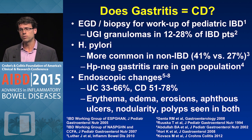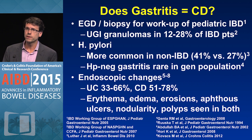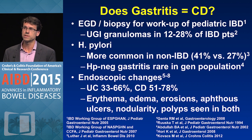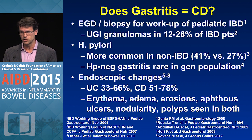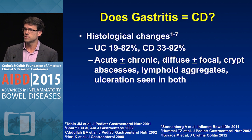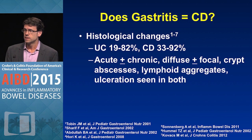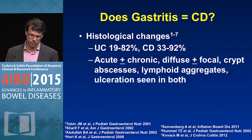H. pylori-negative gastritis is rare in the general population. Interestingly, endoscopic and histological changes of gastritis are very common in both ulcerative colitis — where it can occur in up to two thirds of patients — and in Crohn's — where it can occur in up to three fourths. They can have the same exact findings of erythema, edema, erosions, aphthous ulcers, nodularity, and polyps. Histologically, you can see acute and/or chronic inflammation, which can be diffuse or focal, with crypt abscesses, lymphoid aggregates, or ulceration. So having gastritis does not reliably differentiate ulcerative colitis from Crohn's disease.